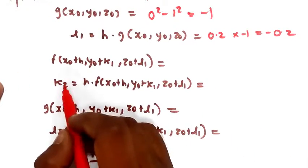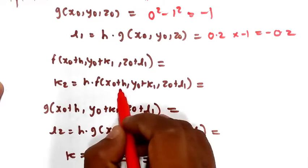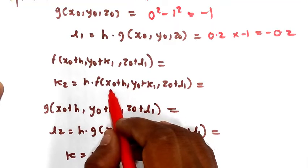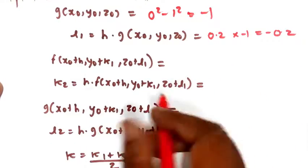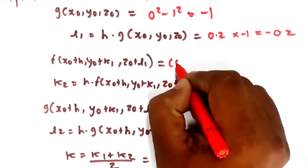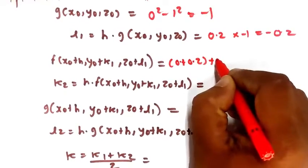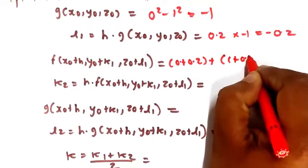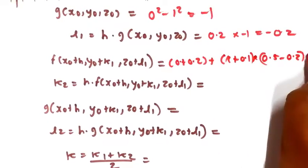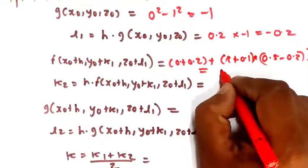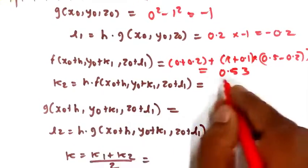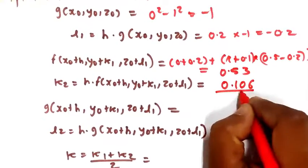For K2, the formula is h × f(x₀ + h, y₀ + K1, z₀ + L1). Substituting: f(0 + 0.2, 1 + 0.1, 0.5 - 0.2) = 0.2 + (1.1)(0.3) = 0.53. Therefore K2 = 0.2 × 0.53 = 0.106.